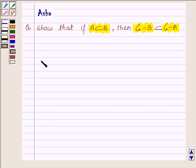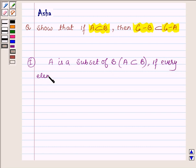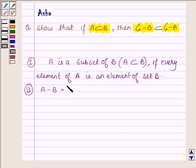So first let us learn some simple ideas. First, A is a subset of B, which is denoted by this sign, if every element of set A is an element of set B. And second, A minus B is the difference of sets and it contains all those x such that x belongs to A and x does not belong to B.